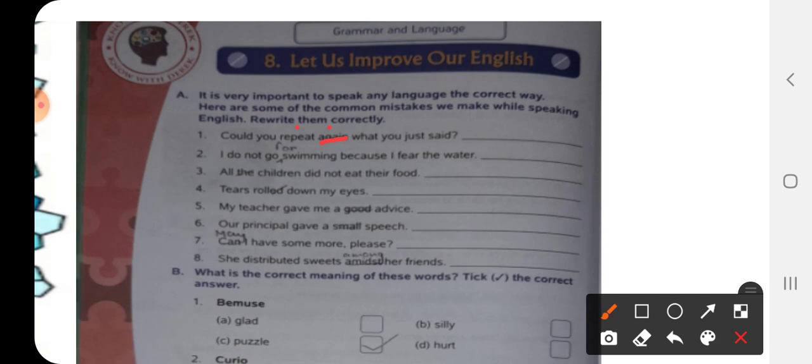You are using, so we have to use the word for. You have to write I do not go for swimming because I fear the water. So you have to add the word for.